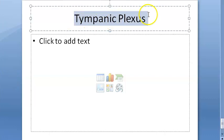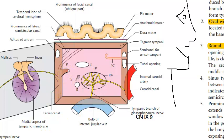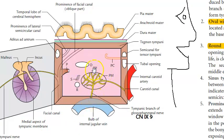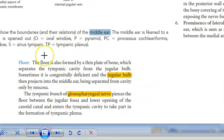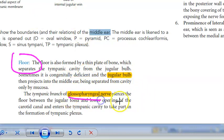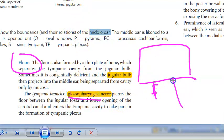In this video we want to understand what the tympanic plexus is. In the anatomy of the middle ear, you saw this tympanic plexus. In the floor of the middle ear canal, the glossopharyngeal nerve pierces the floor between the jugular fossa and the lower opening of the carotid canal, and it enters the tympanic cavity to take part in the formation of the tympanic plexus.